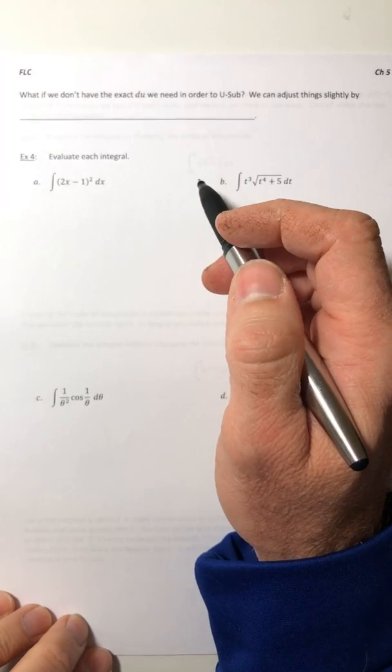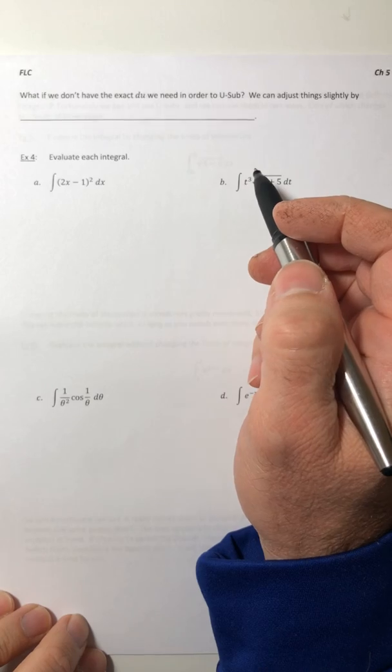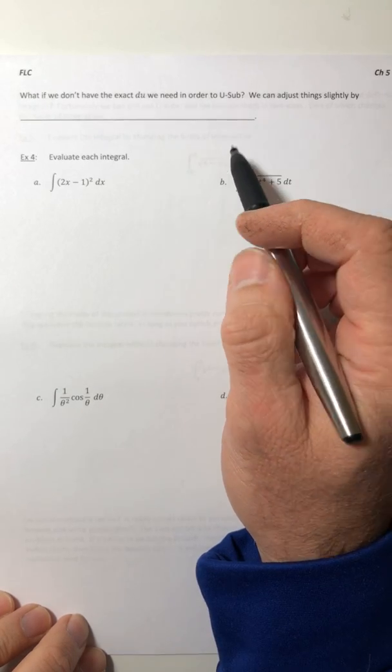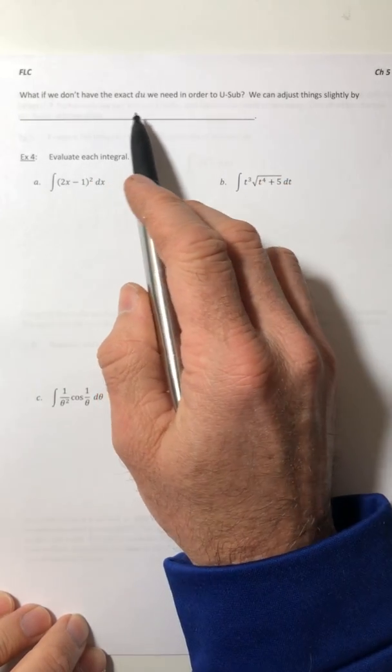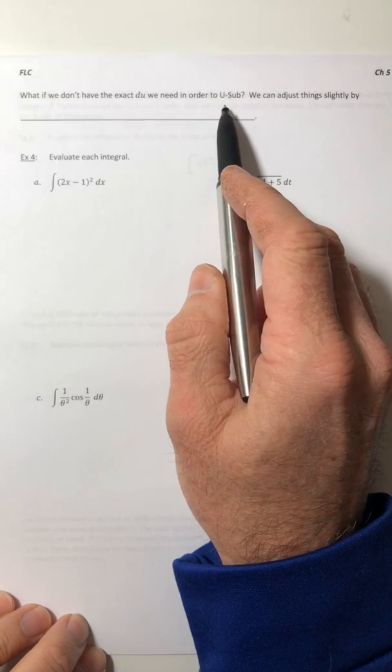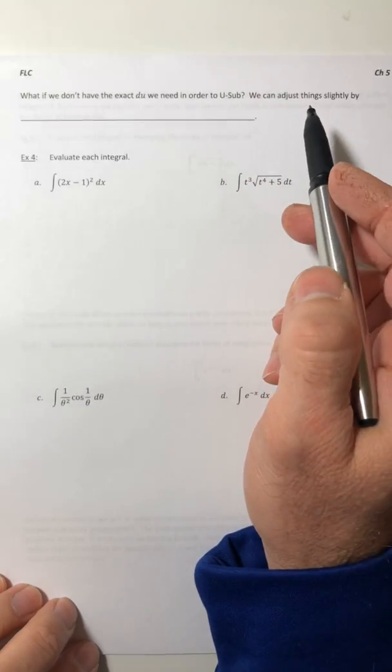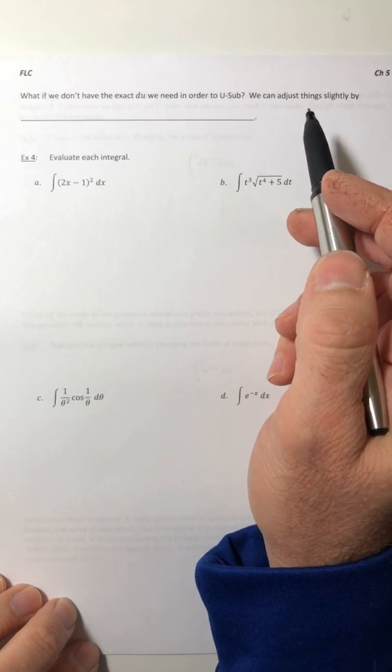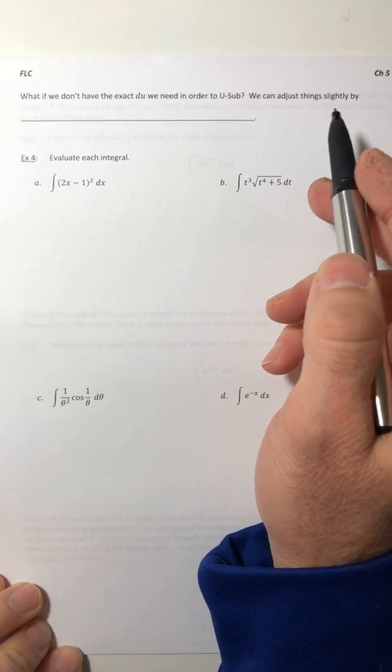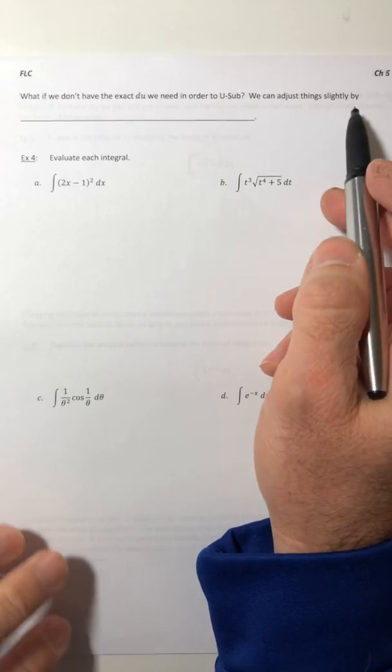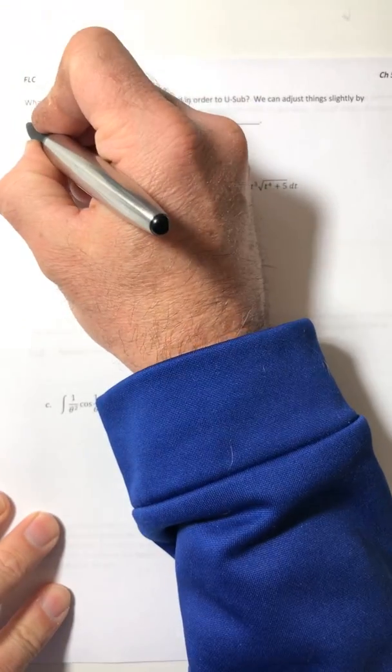All right, so now that we've seen how to use u-substitution, what happens if you don't have the exact du that we need in order to do the u-sub? So what if it's off by like a factor of two or you need a one-half or something? Well, you can adjust things slightly by multiplying by a number or constant and its reciprocal.